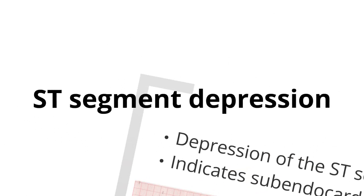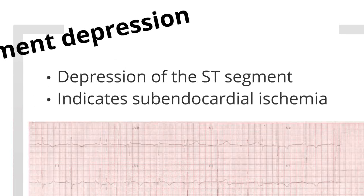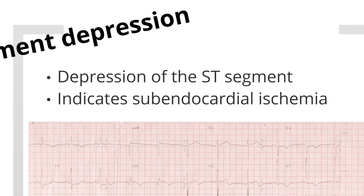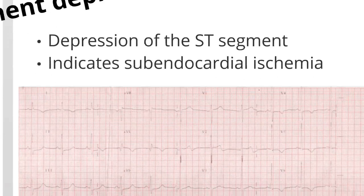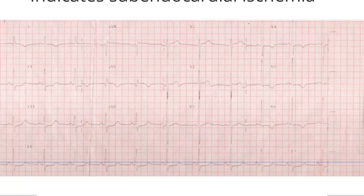Let's begin with ST segment depression. ST segment depression is obviously depression of the ST segment. The baseline from the S wave of the QRS complex to the T wave is normally not elevated or depressed. When the ST segment is depressed, usually compared to the interval from the end of the T to the beginning of the P, this indicates subendocardial ischemia. ST segment depression usually represents reversible ischemia, but does indicate significant atherosclerotic disease, and thus requires further workup.